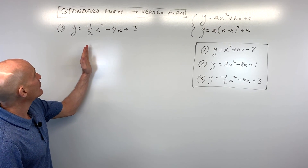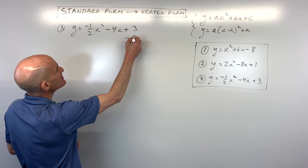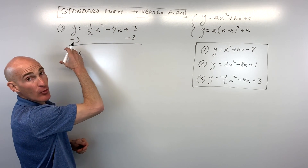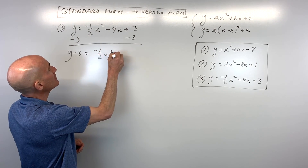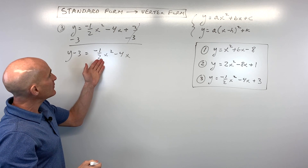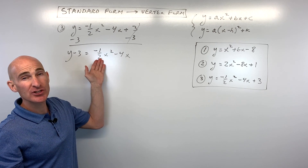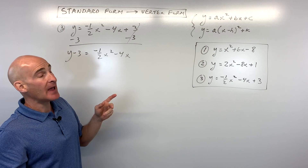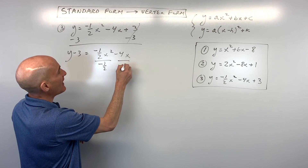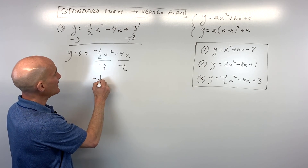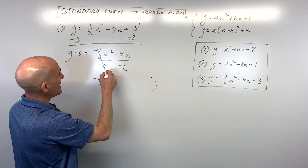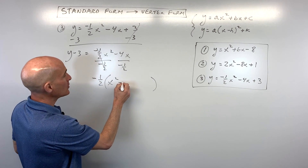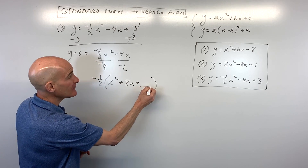For the last problem, I want to show you how to complete the square with these more difficult ones. The first step is to subtract 3 from both sides to get the constant out of the way, leaving y minus 3 equals negative one-half x squared minus 4x. You don't want that leading coefficient to be something other than 1, so factor out negative one-half. Dividing by a fraction is like multiplying by the reciprocal — negative one-half times 8x gives back negative 4x — and leave a little space for completing the square.